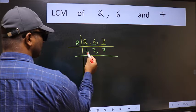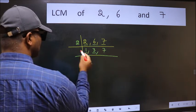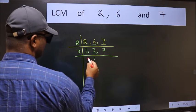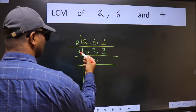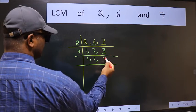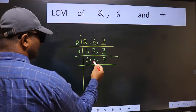Now we got 1 here so focus on the next number 3. 3 is a prime number so 3 wants 3. The other number 7, not divisible by 3 so we write it down as it is. Now we got 1 here and here.